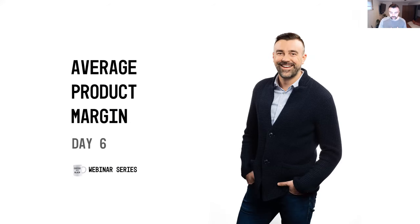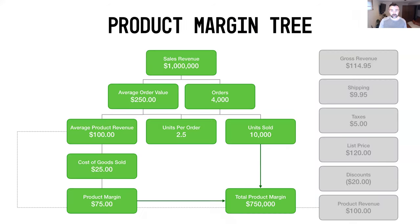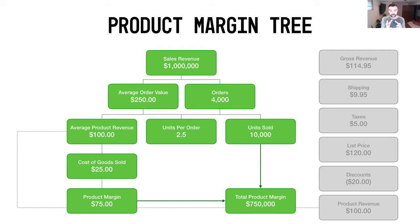As you recall from the last couple of days, we've been making our way through this product margin tree. On the right-hand side of your screen, that's the order margin we'll get into next week. The product margin tree works like this: sales revenue breaks down to average order value and orders; from there you've got average product revenue — or average unit revenue — units per order, and units sold; then from there you've got cost of goods sold and your product margin.